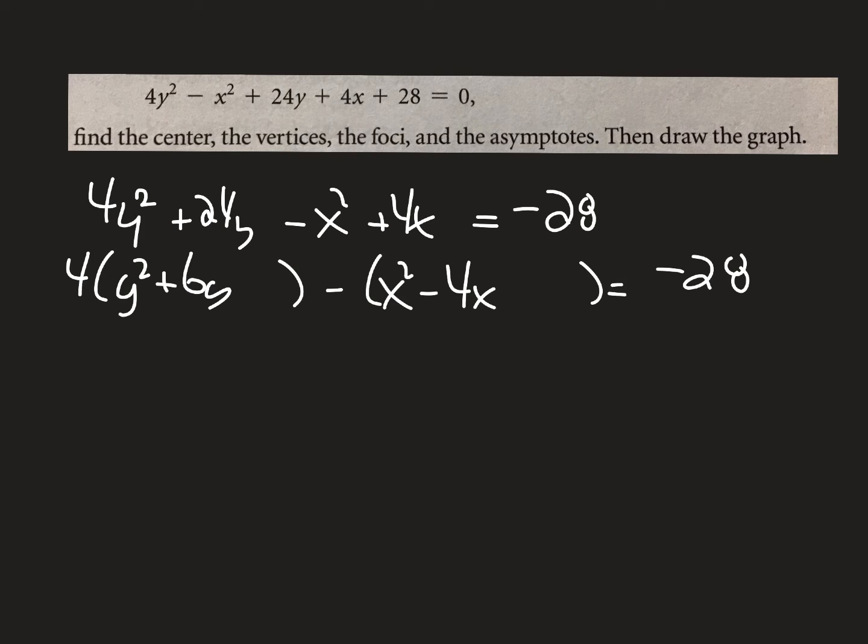Now I'm going to complete the square. Half of 6 is 3, squared is 9. Now this is weird. I wrote a 9, but it's not really 9. It's really 9 times the 4 in the front, which is 36, so I'm going to put 36 on this side. Complete the square here: half of 4 is 2, 2² is 4. However, there's a minus sign in front of that parentheses, so I really just added a negative 4. So here's what I've got: 4(y + 3)² - (x - 2)² = 4. Now I want it to equal 1, so I'm going to divide everything by 4.